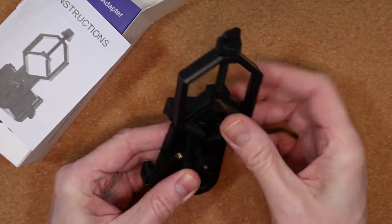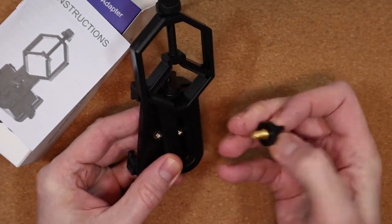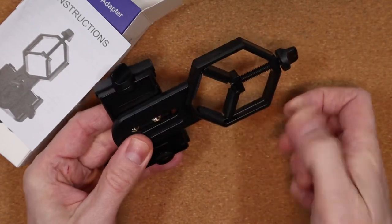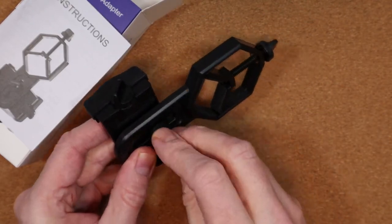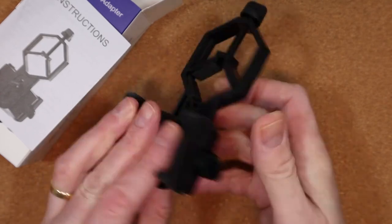There are three dials on it, one to adjust the width of the clamp to suit your phone, one to secure it to the eyepiece and one at the back to adjust the position of the phone so that its lens is in line with the eyepiece.